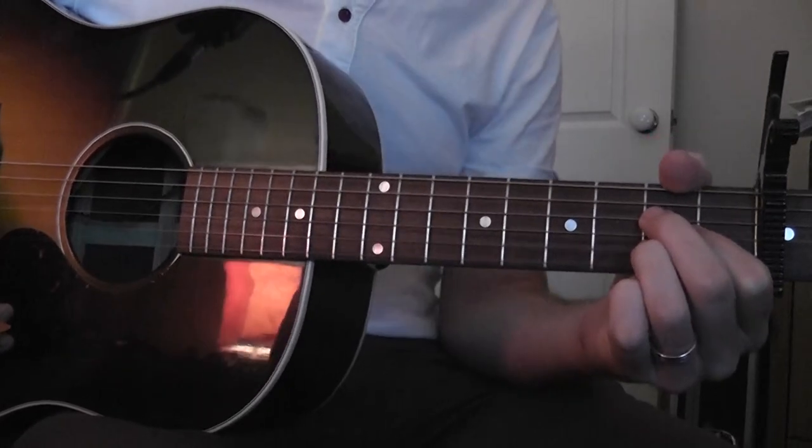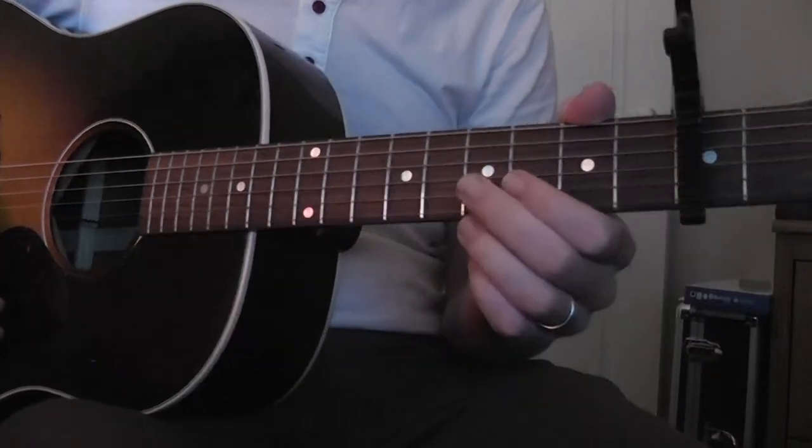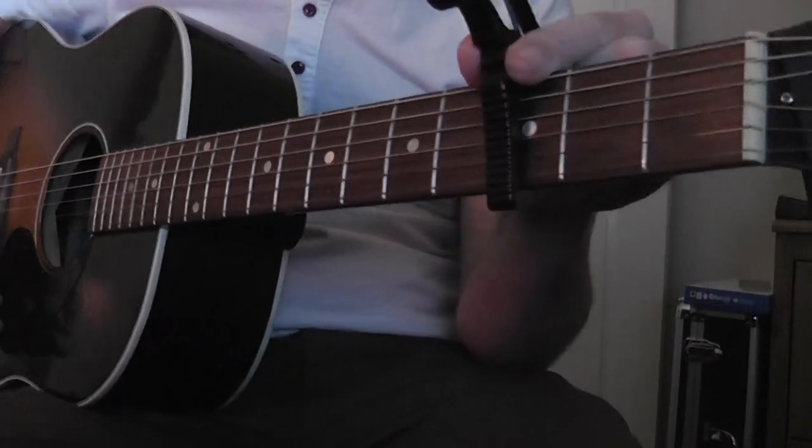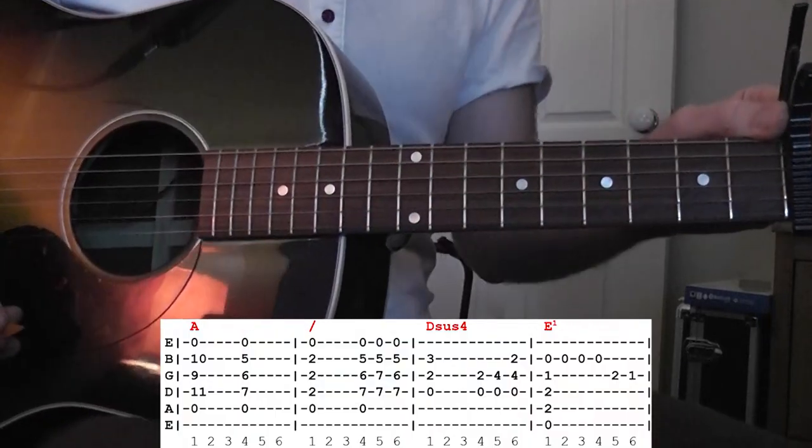I call this Rainy Night in Soho by the Pogues. Put your capo on the 3rd fret. This is how I play it. I don't know how they play it.